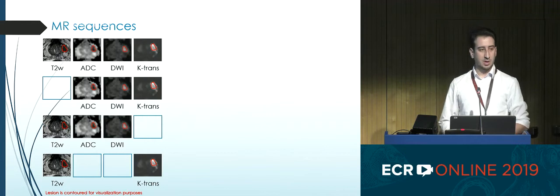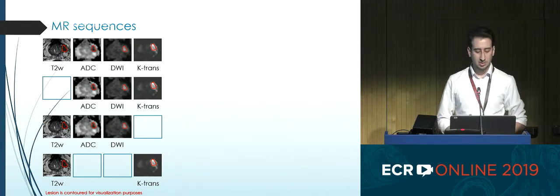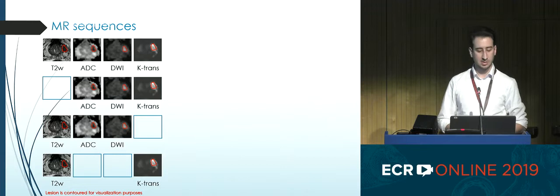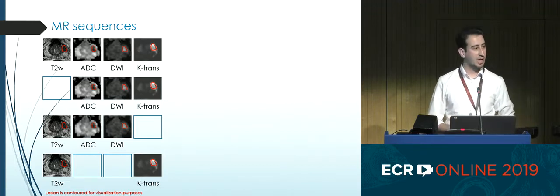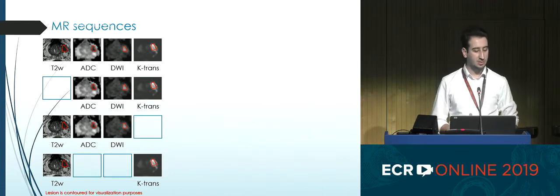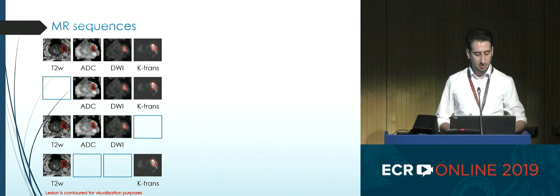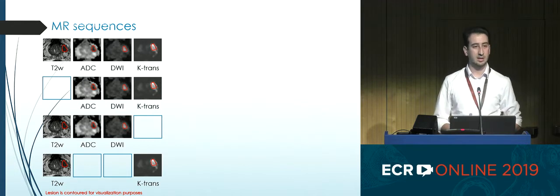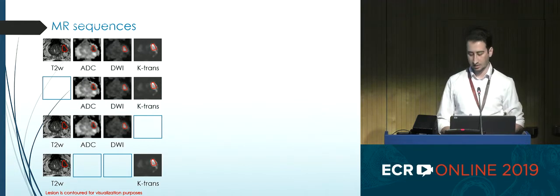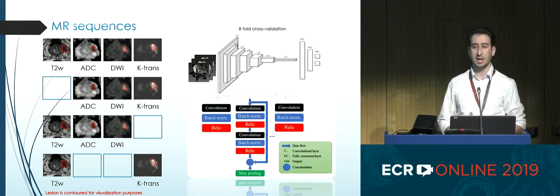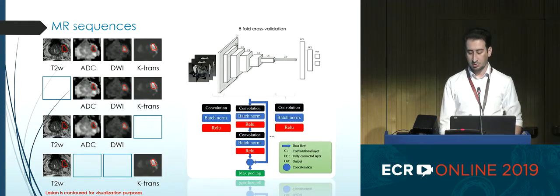The MR sequences we used were tested in different combinations of groups. Group one contains all the sequences in the dataset. In group two, we eliminated T2. In group three, we eliminated K-trans. And then we eliminated DWI and ADC in the last group. We tested all of them in eight-fold cross-validation with our deep learning approach.